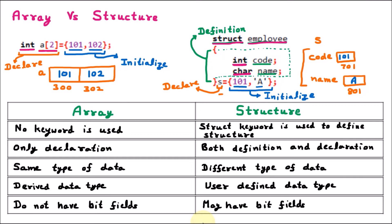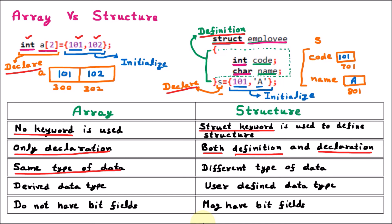To summarize: the first difference is that in array we don't use any keyword, but for structure we use the struct keyword when defining it. The second difference is that array only has declaration, but structure has both definition and declaration. The third difference is that inside an array we can only have the same type of data, such as all integers, but inside a structure we can have different data types — for example, 101 is integer and 'A' is character.